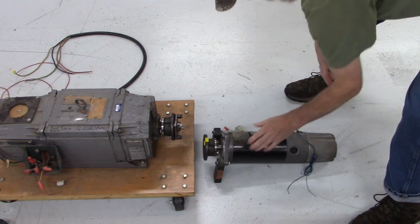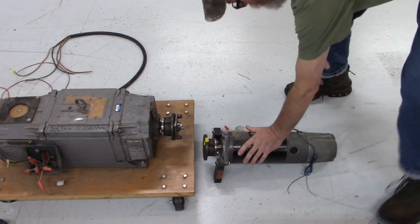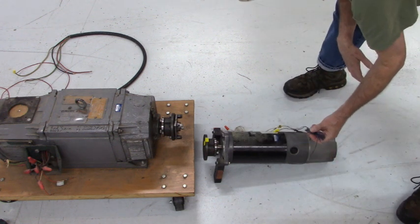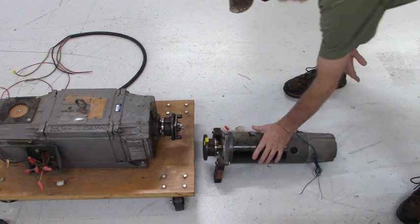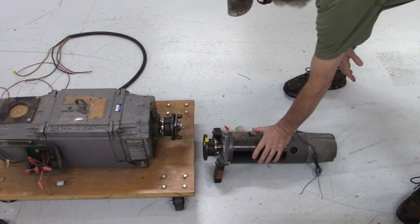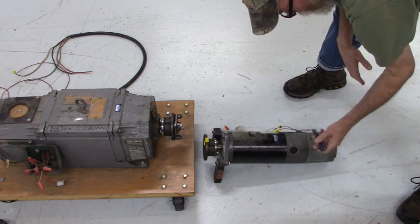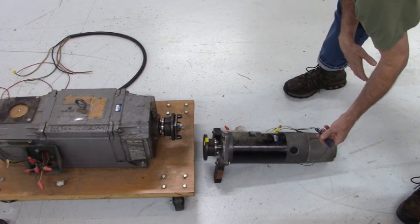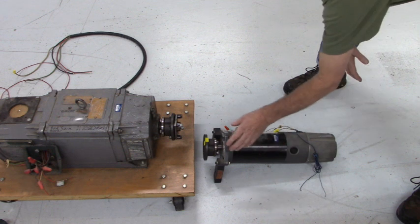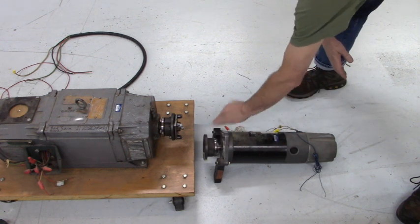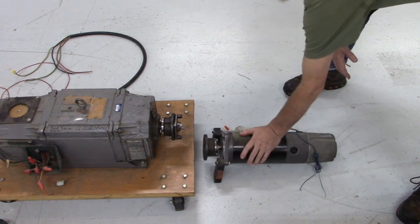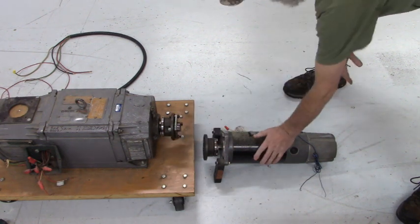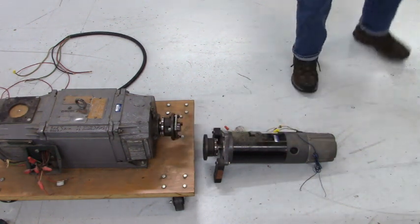But this 90-volt DC motor has tack feedback. It's 7 volts per 1,000 revolutions per minute on this blue and black wire. That's where we're going to get our tack. But first, we have to couple this shaft of that motor to this shaft of this motor.